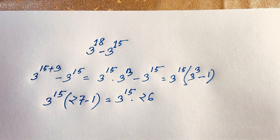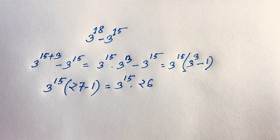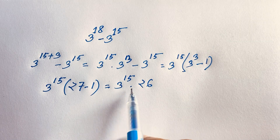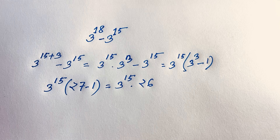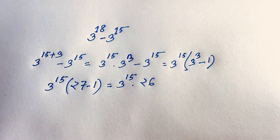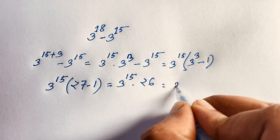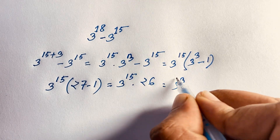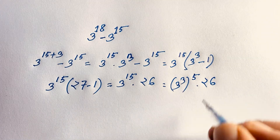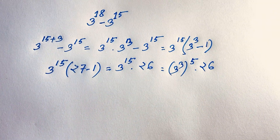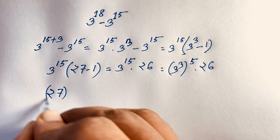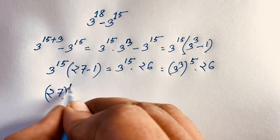So we get 3 to the power 15 times 26. Now, how to calculate this without a calculator? We can rewrite 3 to the power 15 as 3 to the power 3, raised to the power 5 — because 3 times 5 equals 15. So it becomes 27 to the power 5, times 26.